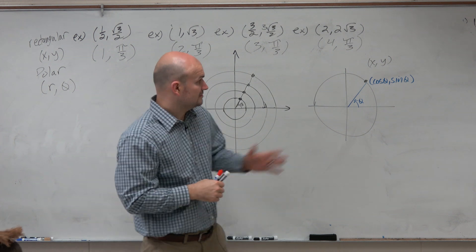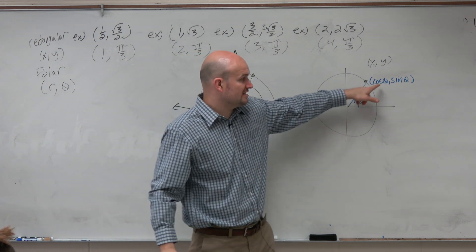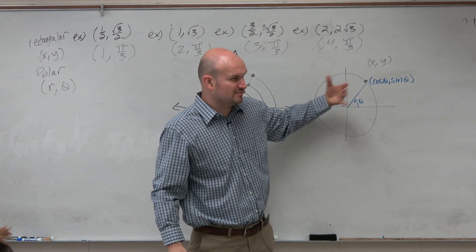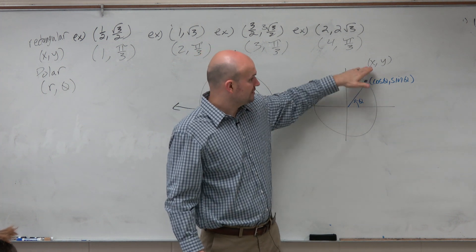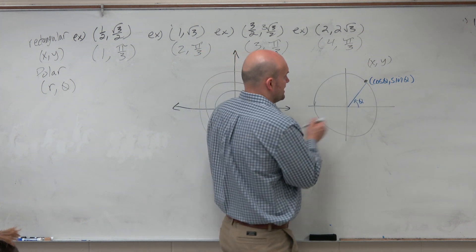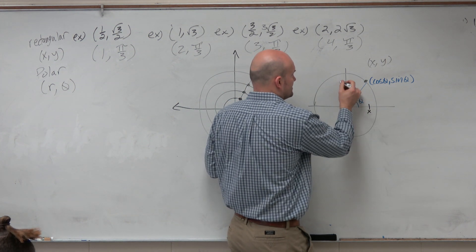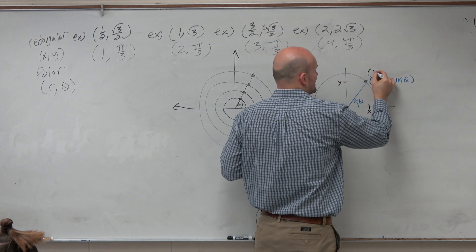Right? Because whatever theta is, you can say cosine of theta, sine of theta - that gives you that point. We did that during our vectors unit. So you can call this the (x, y) coordinate - there's x, there's y, and you can give it an x and y.